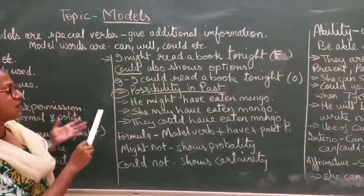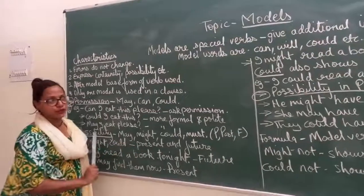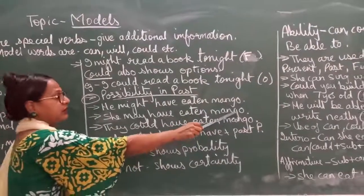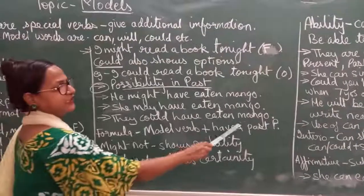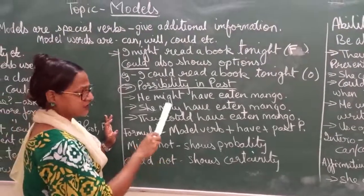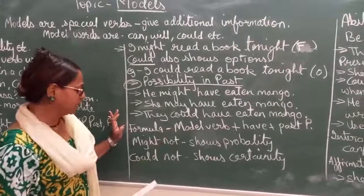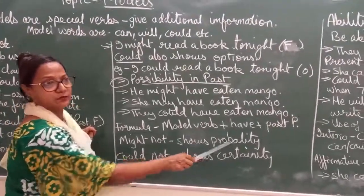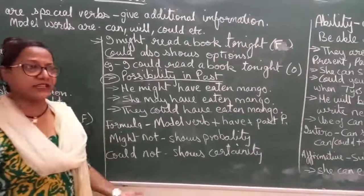Another point is possibility in the past. Till now we have seen possibility in the present and future; now we will see possibility in the past. For example, 'He might have eaten mango', 'She may have eaten mango', 'They could have eaten mango.' A useful formula: modal verb + have + past form (third form of the verb). Might not shows probability — it can happen or it cannot. Could not shows certainty, meaning something surprising has taken place.